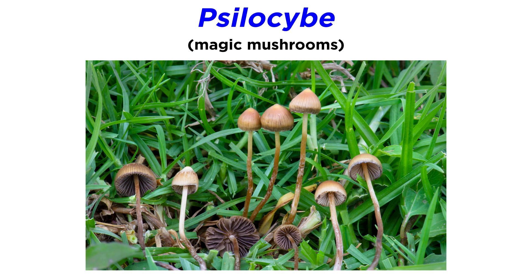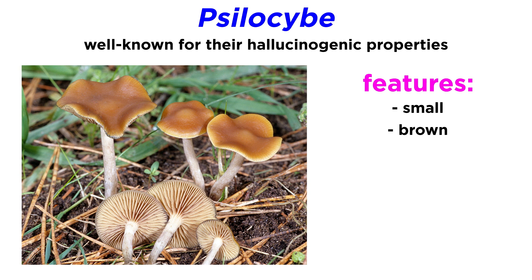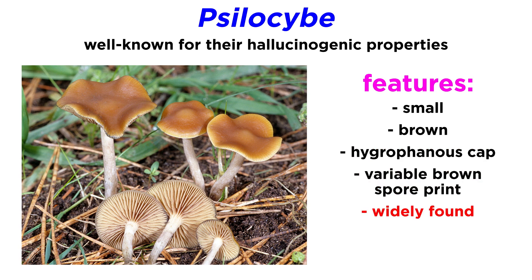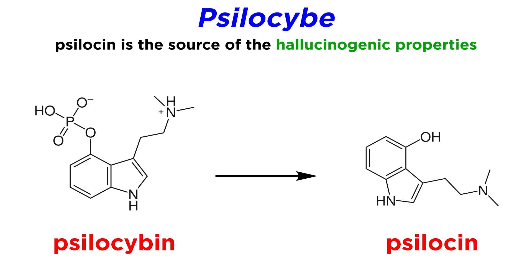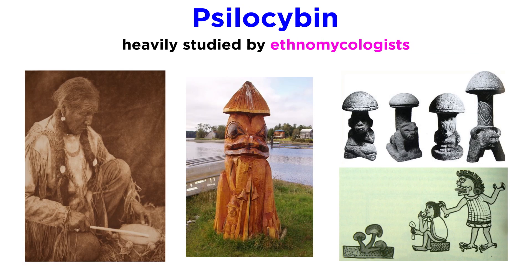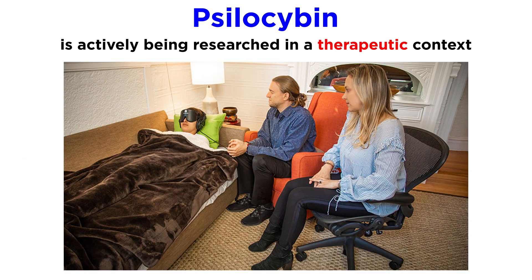The genus Psilocybe, commonly known as magic mushrooms, is an iconic group of gilled mushrooms famous for their hallucinogenic properties. Psilocybe species are similar to Galerina species, as they are generally small and brown, with a hygrophanous cap, and produce variable brown spore prints. This genus is found throughout the world in a variety of habitats and is saprobic on a number of different substrates. A key identifying characteristic is a blue staining reaction when the fruiting body is bruised, caused by the oxidation of a molecule called psilocybin. This molecule gets broken down into a similar molecule called psilocin, which is the source of the hallucinogenic properties. Psilocybin is the subject of much research in ethnomycology, which studies historical uses and sociological impacts of fungi, and is also being researched for its potential use as a therapy for anxiety and depressive psychological disorders.